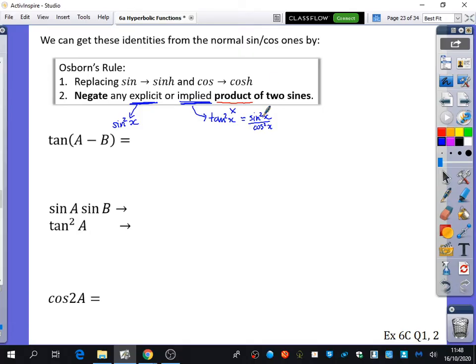The only other thing we need to look out for is if we had a cot squared x, because cot squared x is cos squared x over sine squared x. So we've got an implied product of two sines. Within that, we have two sines being multiplied together. So let's just quickly go back a second.